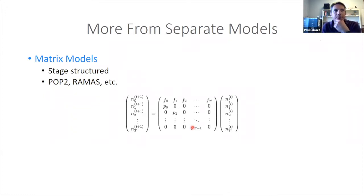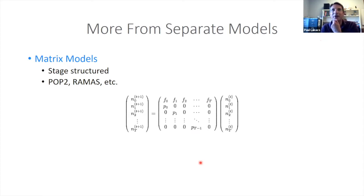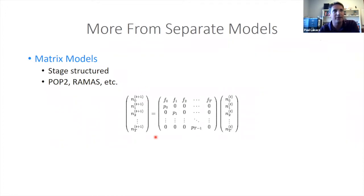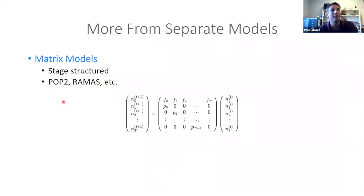We can also think about independent models from the process model side. For fuzzy mammals with once-a-year breeding, we can describe our process model pretty nicely as a matrix model — population sizes, recruitment rates across the top, and survivals down the diagonal. These are typical stage-structured Leslie-Lefkovich kind of models that you find in PopTools, RAMAS, and other standard modeling software.